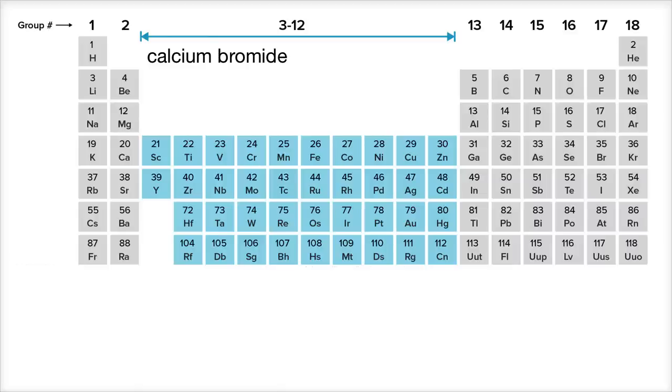Let's now see if we can come up with the chemical formula for the ionic compound calcium bromide. And like always, if you are inspired, pause the video and see if you can come up with it on your own.